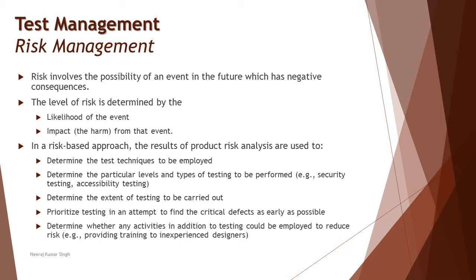The level of risk is determined by the combination of two parameters: impact and likelihood. As someone getting started with QA, you don't need to deep dive here — you really need someone experienced in risk analysis to do this job. But as a tester, you may be required to contribute, such as identifying from a testing perspective what is a risk and what the impact would be. Until you gain a few years of experience, you may not be required to independently plan risk mitigation.